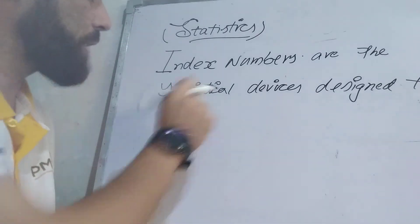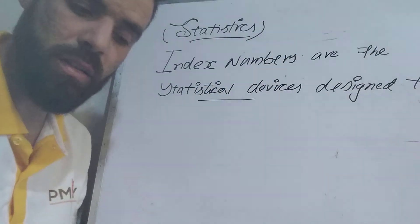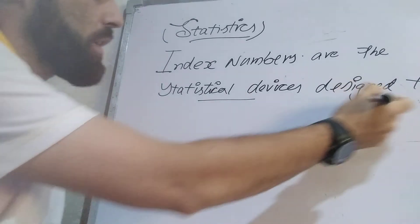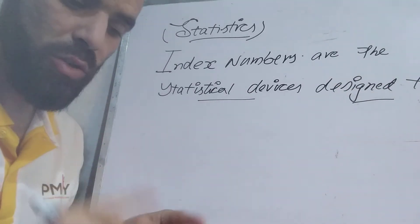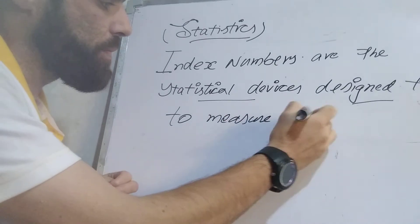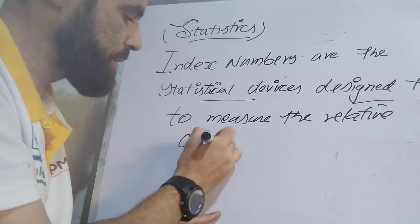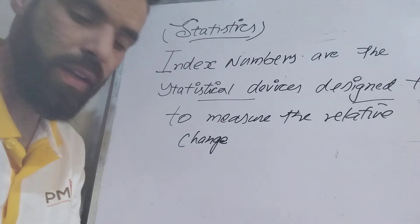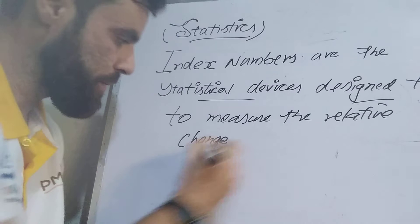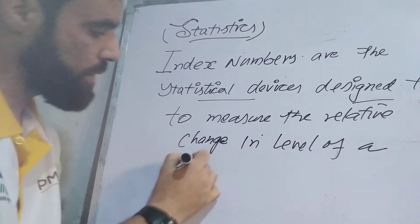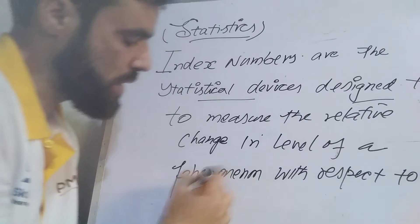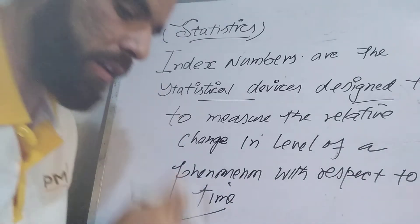If we first go through the definition, index numbers are statistical devices that have been designed to measure the relative change. These are used to measure the relative changes in the level of a phenomenon with respect to time. Here, time is very crucial — time plays an important role.